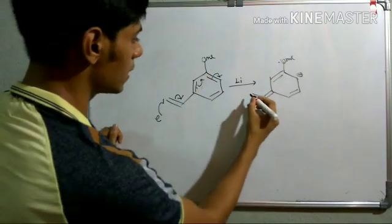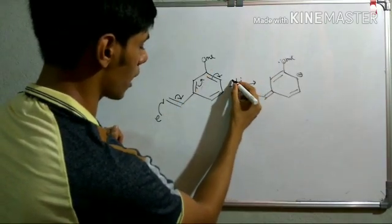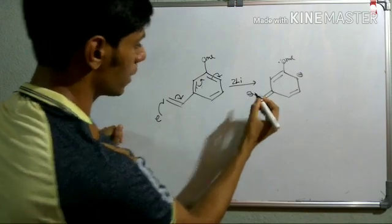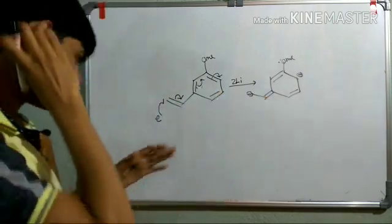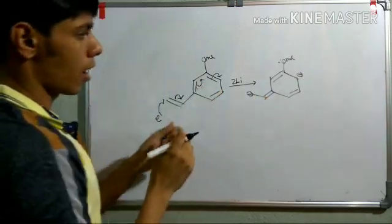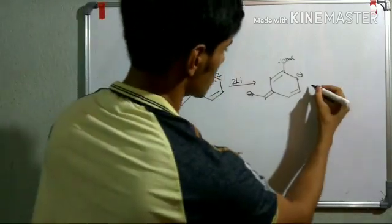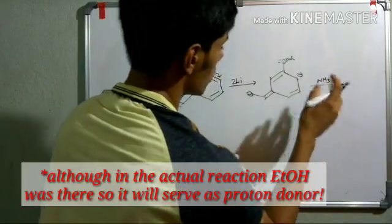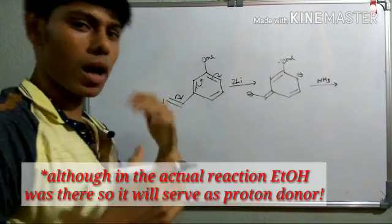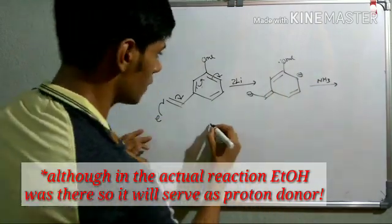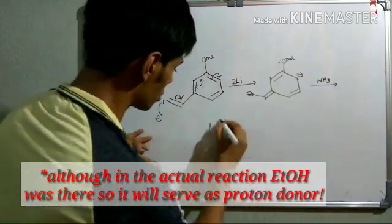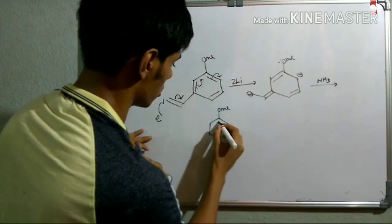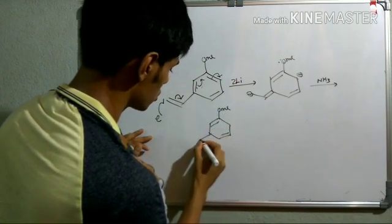Now, lithium can give another electron, so with two lithium atoms, there will be another negative charge formed. Protonation then has to take place by the ammonia molecule — ammonia can also serve as a proton donor. If protonation takes place, you will have this structure.